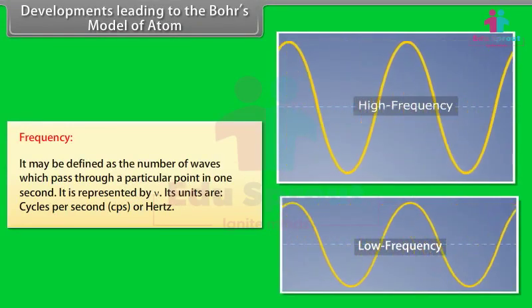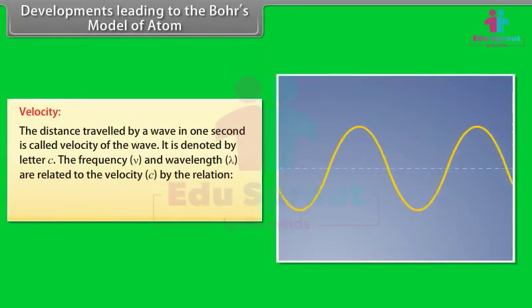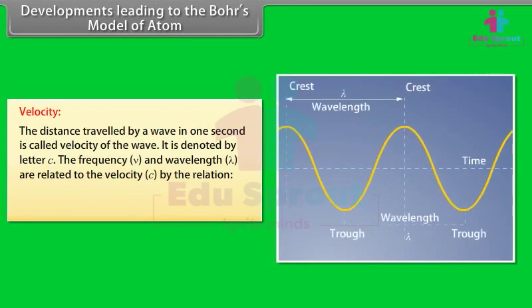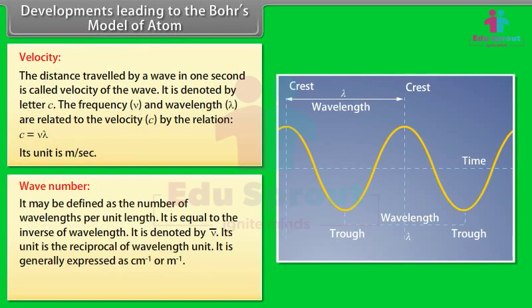Frequency is the number of waves passing through a point per second, represented by ν, with units of cycles per second or hertz. Velocity is the distance traveled by a wave per second, denoted by C, related to frequency and wavelength by C = ν × λ, with units of meters per second. Wave number is the number of wavelengths per unit length, equal to the inverse of wavelength, denoted by ν̄ = 1/λ, expressed in cm⁻¹ or m⁻¹.